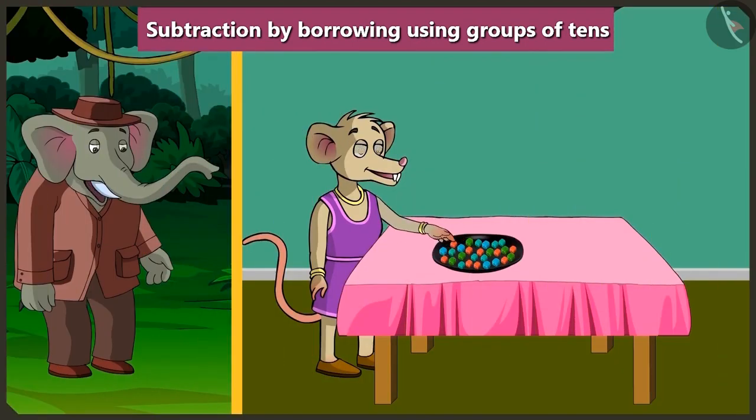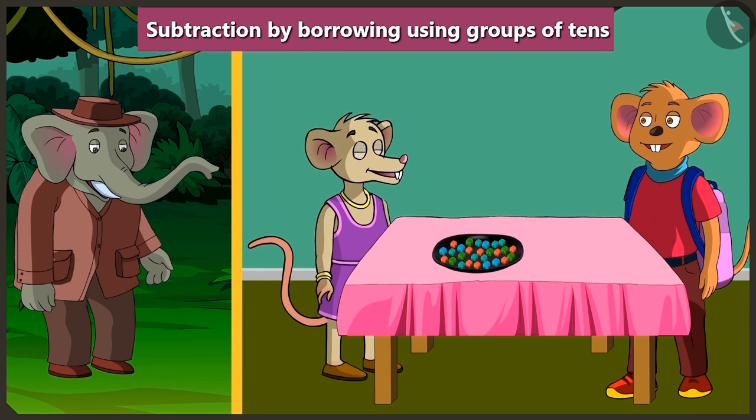Oh, what is this? Chi-Chi is counting her jellies again and again. I think she is having some difficulty in counting the jellies. Look, Choo-Choo has come. He will definitely help Chi-Chi. Let's see.